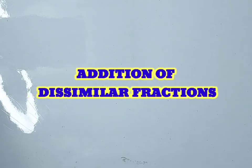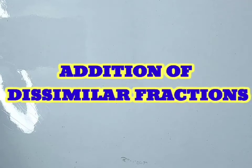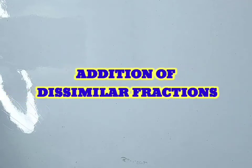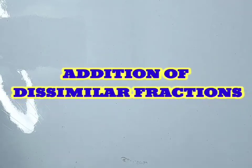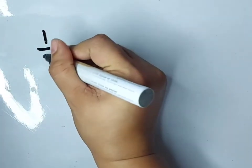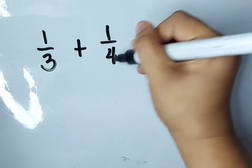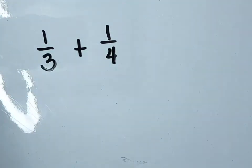This time, I will be discussing how to add dissimilar fractions using LCD or least common denominator. The first step is to write the given. We have 1 over 3, or 1 third, plus 1 over 4, or 1 fourth. The first step is to find the LCM or the least common denominator of the given fractions.